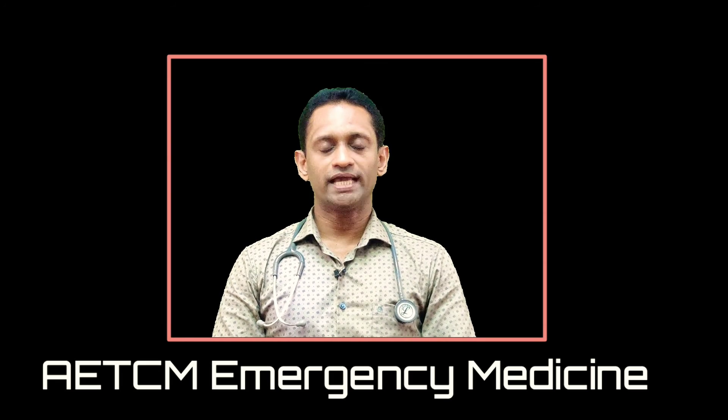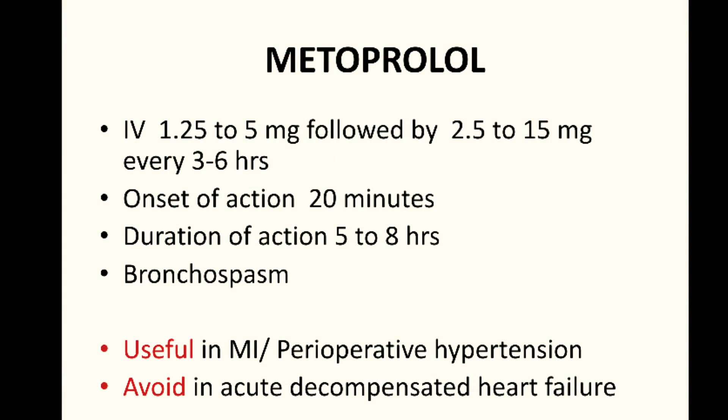Metoprolol can be used during hypertensive emergency. The dose is 1.25 to 5 mg followed by 2.5 to 15 mg every 3 to 6 hours. Onset of action is within 20 minutes and duration of action is 5 to 8 hours. It can produce bronchospasm and is especially useful in myocardial infarction and perioperative hypertension.